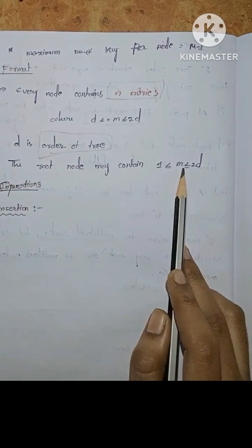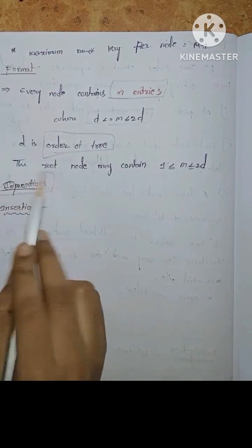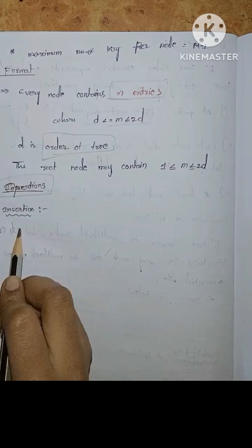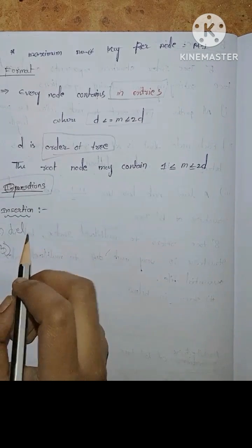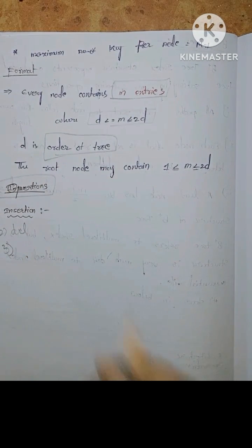The root node may contain 1 less than or equal to M, less than or equal to 2D. And operations include insertion, deletion, and searching. These are the operations for B plus tree.